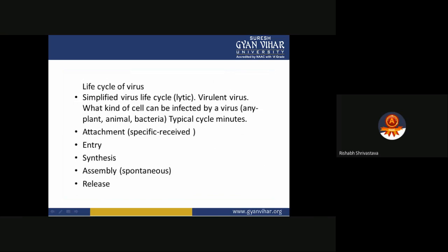Simplified virus life cycles include the lytic and the virulent cycle, describing what kind of cells can be infected by a virus. Any plant, animal, or bacterial cells can be infected. The typical cycle completes in minutes and includes attachment to specific receptors, entry, synthesis, assembly, and release.